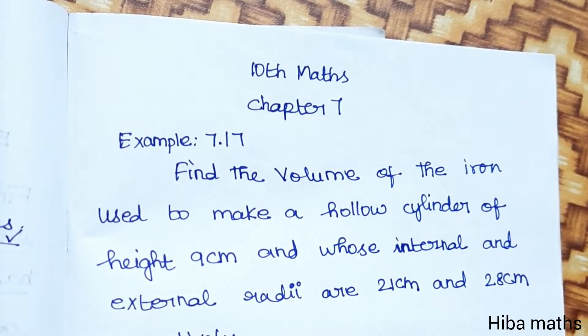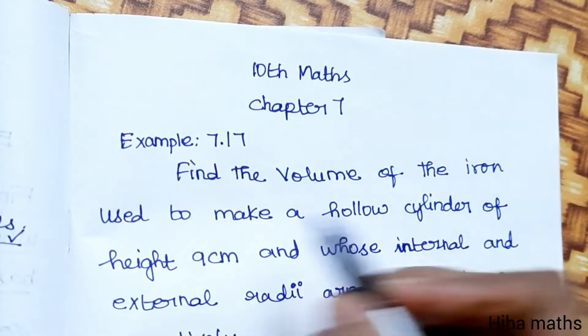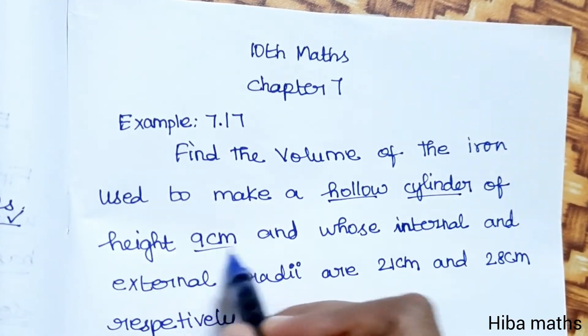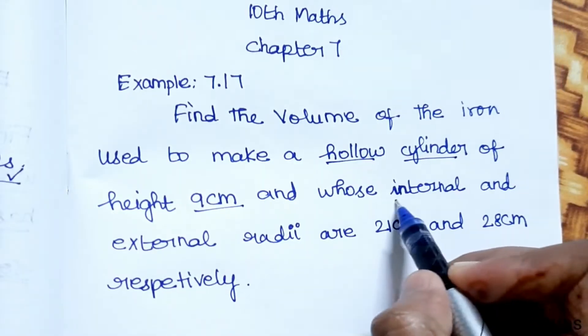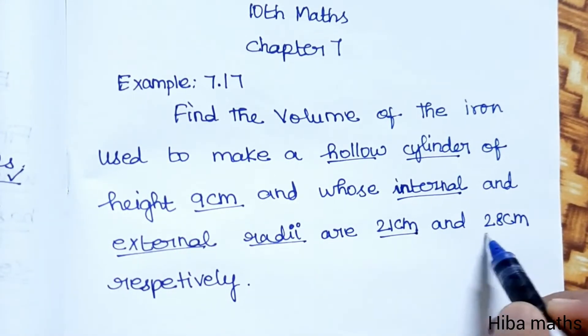Hello students, welcome to Hiba Maths, 10th standard Maths, Chapter 7, Example 7.17. Find the volume of the iron used to make a hollow cylinder of height 9 centimeters and whose internal and external radii are 21 centimeters and 28 centimeters respectively.